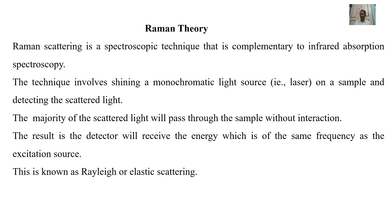Raman is a light scattering technique whereby a molecule scatters incident light from a high intensity laser light source. Most of the scattered light is at the same wavelength as the laser source and does not provide useful information — this is called Rayleigh scatter. However, a small amount of light is scattered at different wavelengths which depend on the chemical structure of the substance. This is called the Raman scatter.